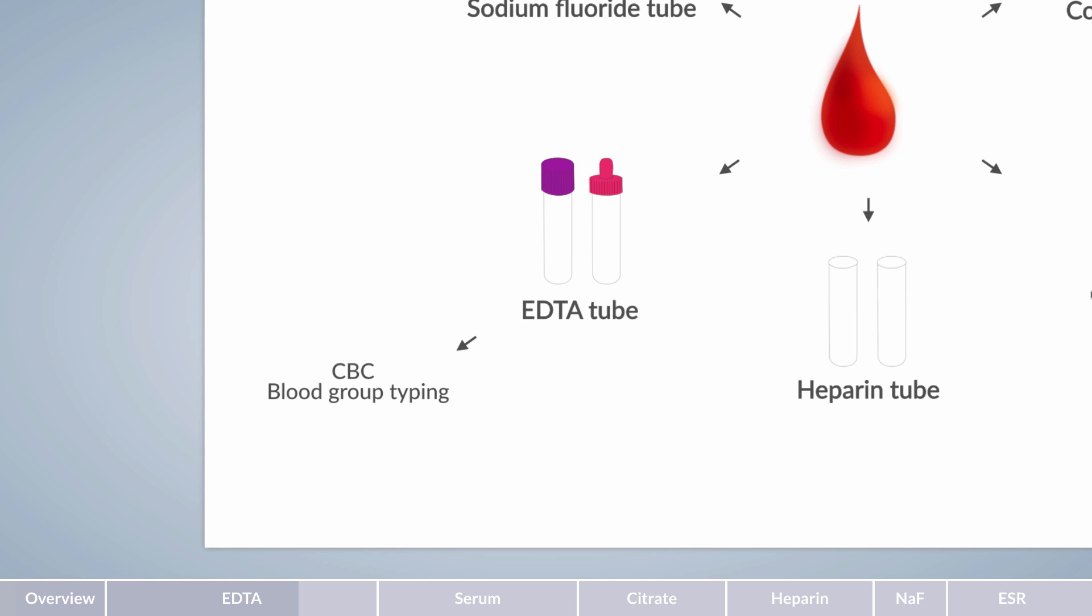A larger collection tube is usually used for immunohematology tests. EDTA blood is also suitable for determining hemoglobin A1C, several genetic tests, for example, single-point mutations such as factor V Leiden, and pathogen detection, for example, HIV via polymerase chain reaction, in short, PCR.